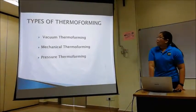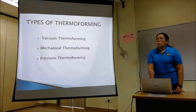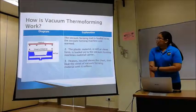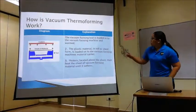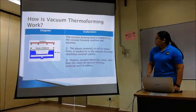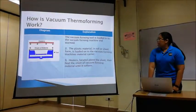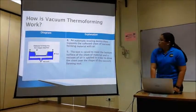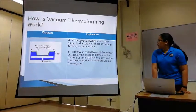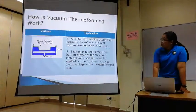There are several types of thermoforming process: vacuum thermoforming, mechanical thermoforming, and pressure thermoforming. For vacuum thermoforming: the vacuum forming tool is placed in the vacuum forming machine. The plastic material in film or sheet form is loaded onto the vacuum forming machine material carrier. The heater located above the sheet heats the sheet until it becomes softened. The auto-leveling device then supports the softened sheet with air. The tool is raised to meet the bottom surface of the sheet, and vacuum air is applied in order to draw the sheet over the shape of the vacuum forming tool.